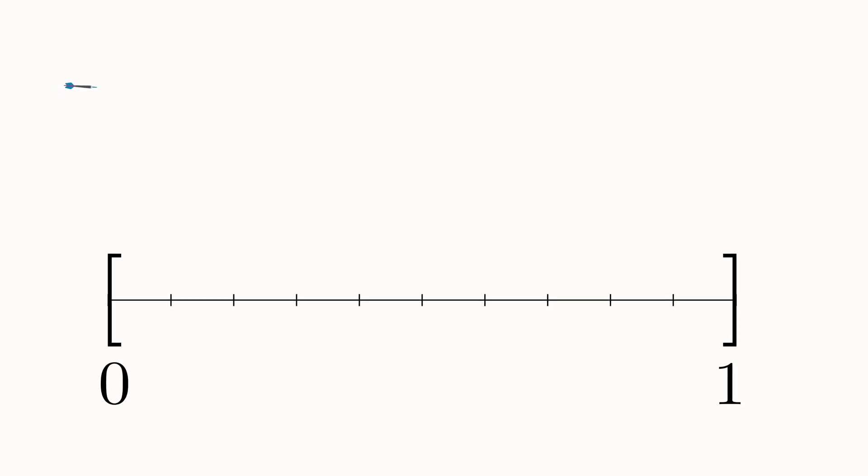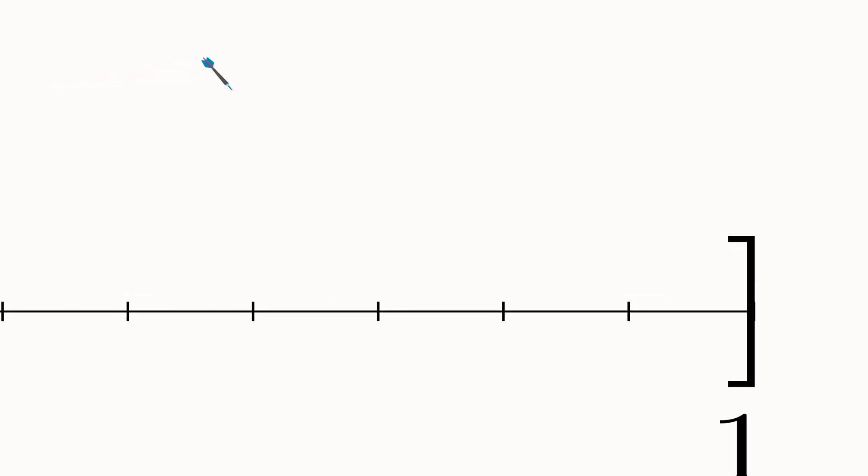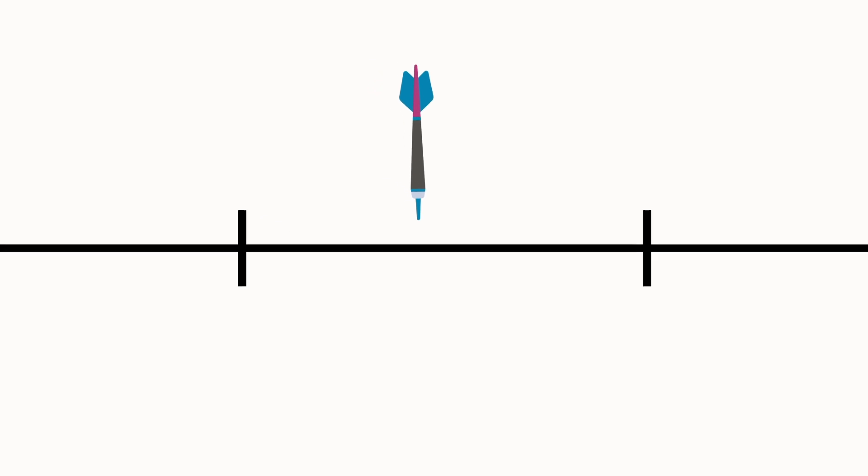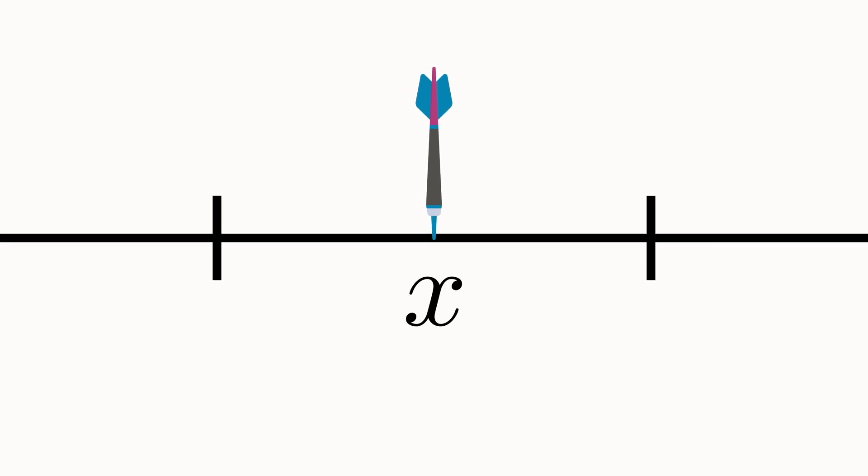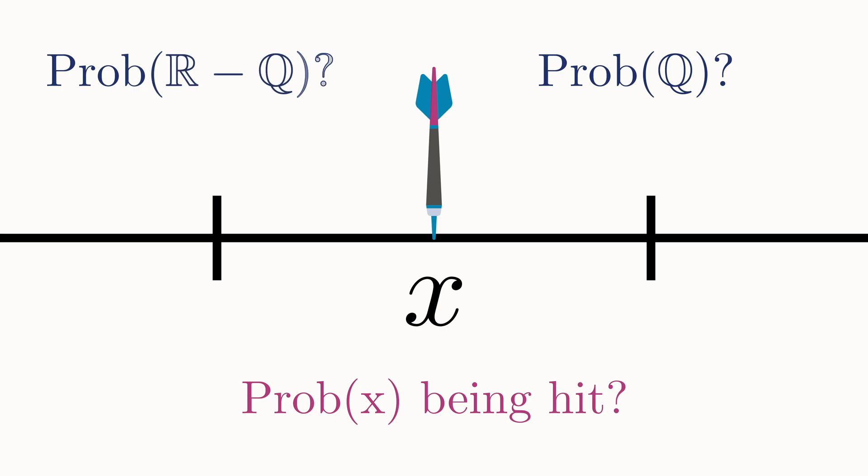Imagine randomly throwing a dart at the unit interval of the real line, and consider three simple questions. What is the probability of any specific number being hit? What is the probability that the dart would hit a rational number? And finally, is the probability that it would hit an irrational number the same?